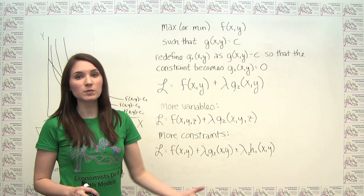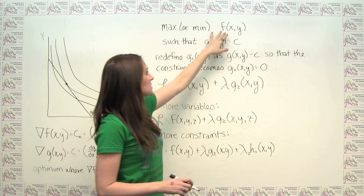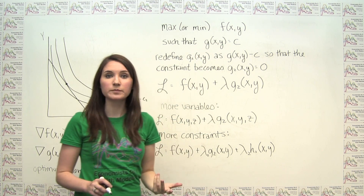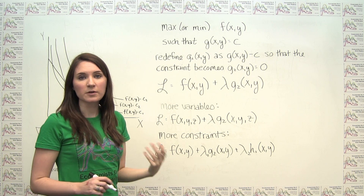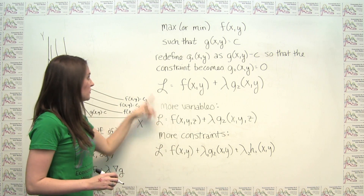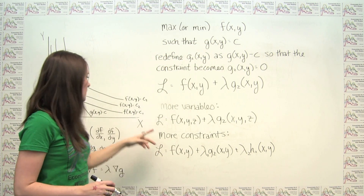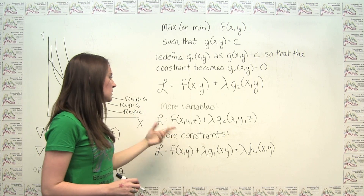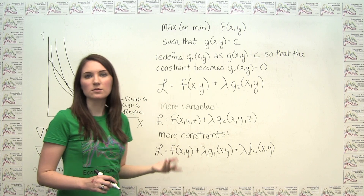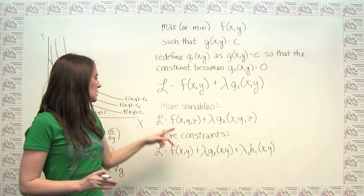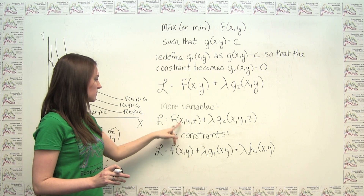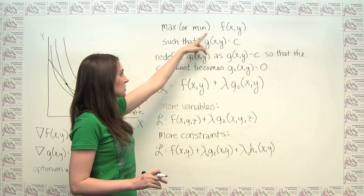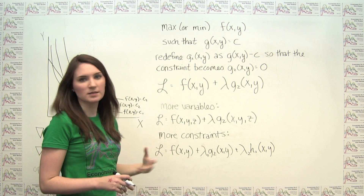One of the upsides of the Lagrange multiplier approach is that it's quite flexible — there aren't many restrictions on the functional forms of f(x, y) and g(x, y). It also handles more variables straightforwardly: if you have three choice variables x, y, and z, the Lagrangian simply becomes f(x, y, z) + lambda · g(x, y, z), and you take partial derivatives with respect to each variable, giving you more equations but the same structure.